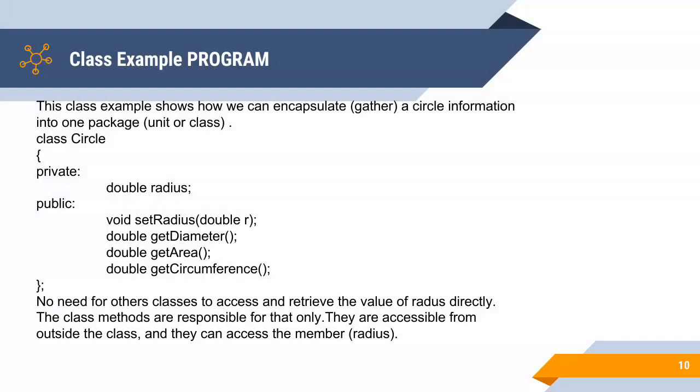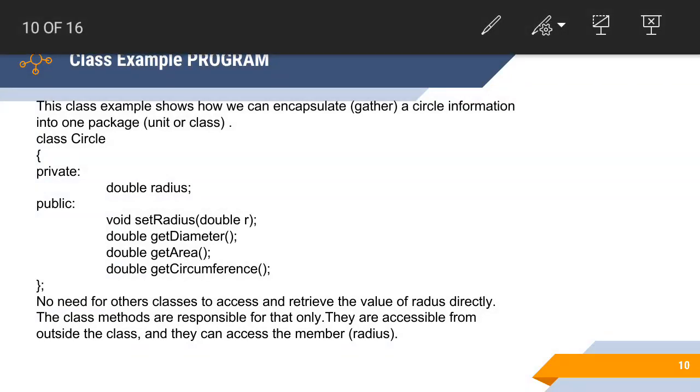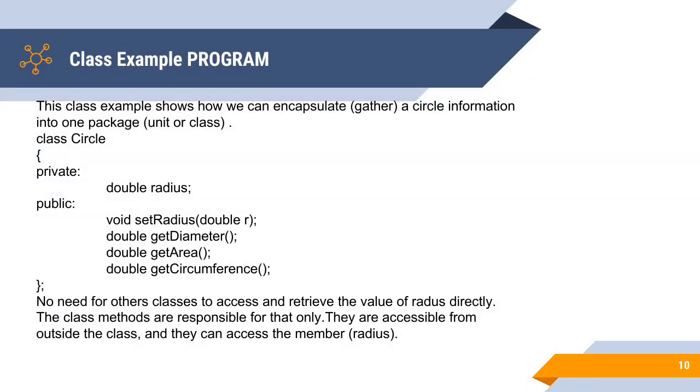There is no need for other classes to access and retrieve the value of radius directly. The class methods are responsible for that. They can access the radius and they are accessible from outside of the class because they are declared as public.